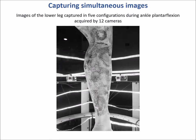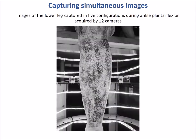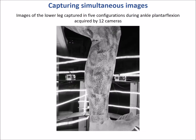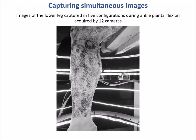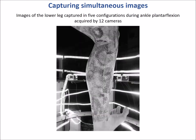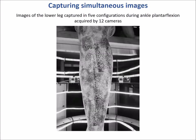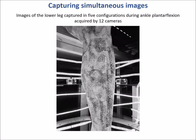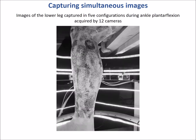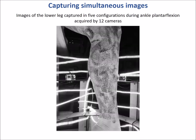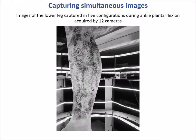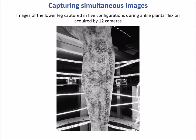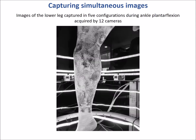In this video, we show an example of an in vivo 360-degree DIC measurement using the 12-camera rig. We applied a speckle pattern to the lower limb of a human subject and imaged the leg while the subject performed ankle plantar flexion.